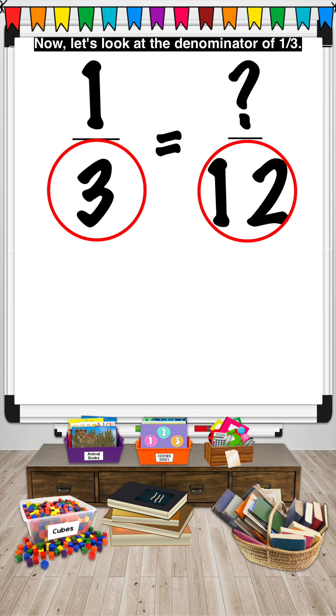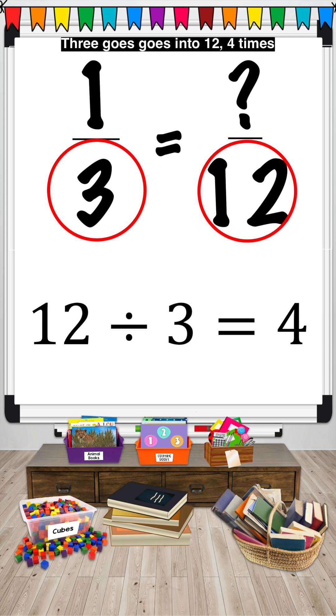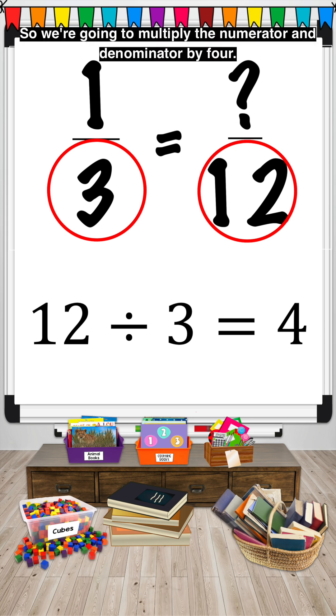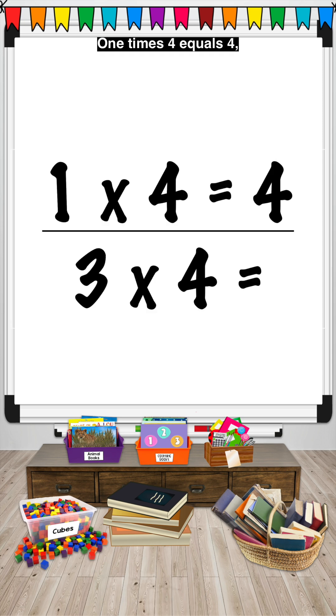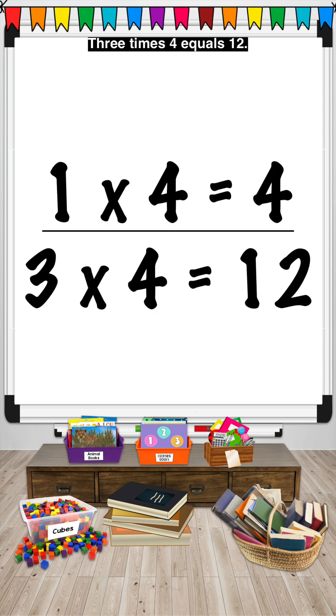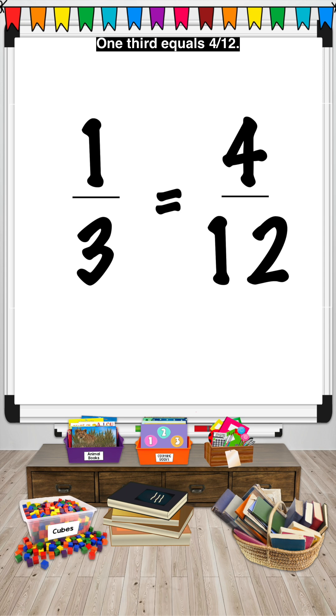Now let's look at the denominator of one-third. Three goes into twelve four times. So we're going to multiply the numerator and denominator by four. One times four equals four. Three times four equals twelve. One-third equals four-twelfths.